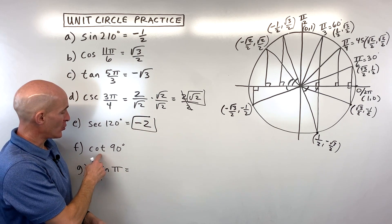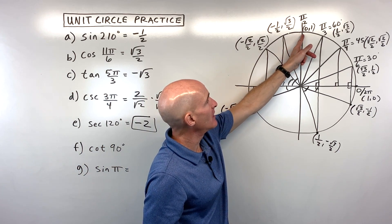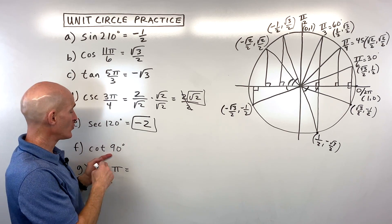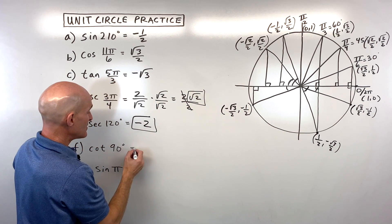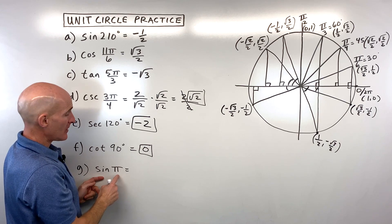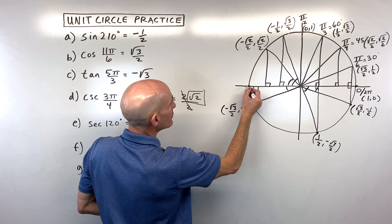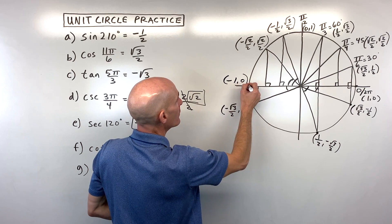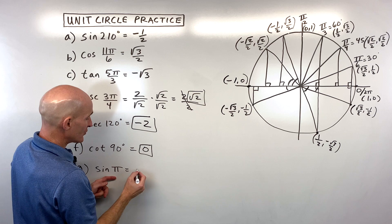Letter F: cotangent of 90 degrees. 90 degrees puts us at the top of the unit circle, coordinates (0, 1). Cotangent is the reciprocal of tangent, which is x over y: 0 divided by 1 equals 0. Letter G: sine of π. π is 180 degrees, at the point (negative 1, 0). Sine is the y-coordinate, so the answer is 0.